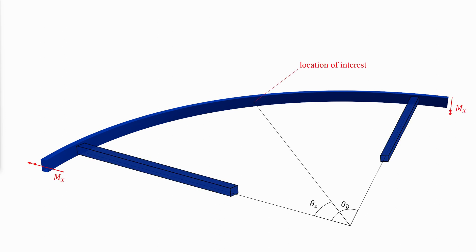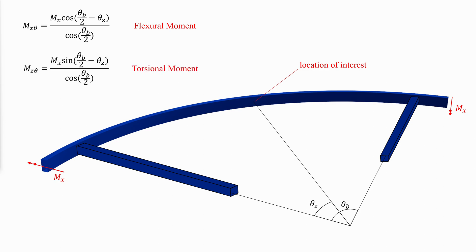However, the equations are cumbersome for design office use and are available only for a limited number of idealized cases. For the simplest case shown, where the beam is subjected to equal and opposite flexural moments Mx at the ends of the unbraced segment, the flexural moment and the torsional moment are each calculated using specific equations. From these equations, the maximum flexural moment occurs halfway between the torsional supports, and the maximum torsional moment occurs at the ends.